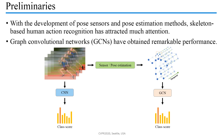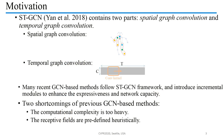Recently, GCN-based methods have achieved remarkable performance. In AAAI 2018, Yan et al. proposed ST-GCN, which contains two parts: Spatial Graph Convolution and Temporal Graph Convolution. For the spatial dimension, the adjacency matrix is partitioned into three partitions. For the temporal dimension, the temporal graph is constructed by connecting consecutive frames.